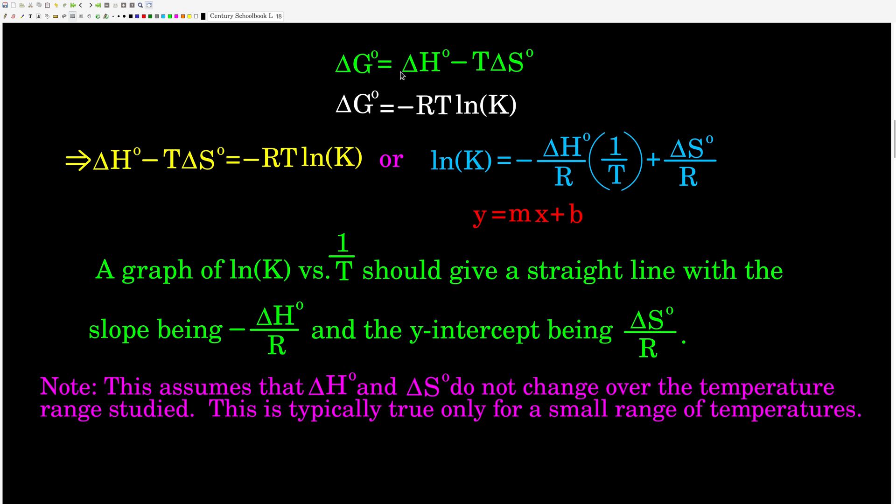Because both of these are equal to ΔG°, we can set them equal to each other. We get ΔH° minus TΔS° equals negative RT ln(K). Rearranging this a little bit, solving for natural log of the equilibrium constant, we get that equal to negative ΔH° over R times 1 over the temperature in Kelvin plus ΔS° over R.